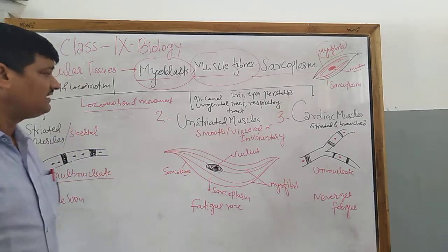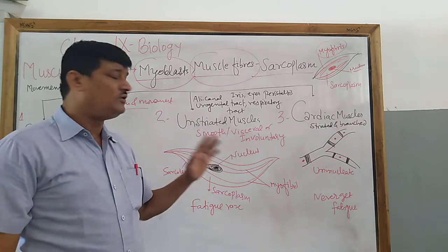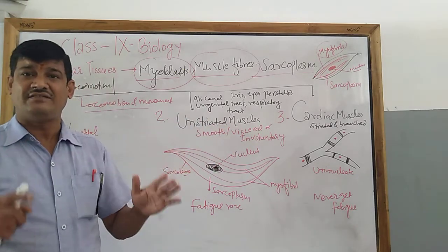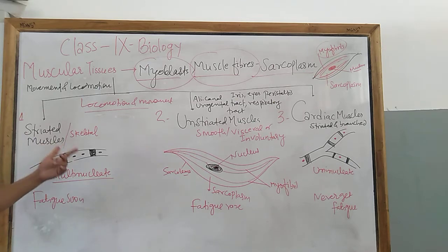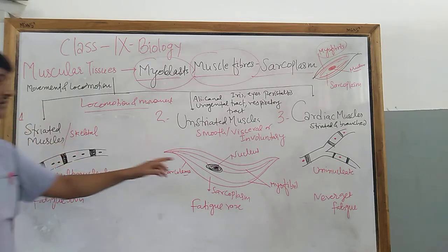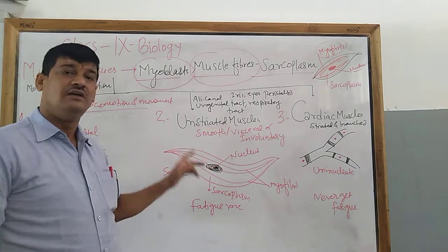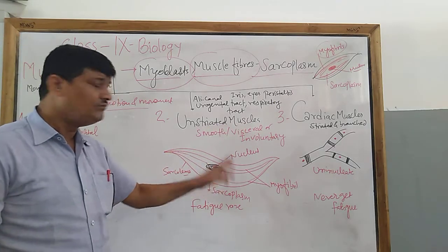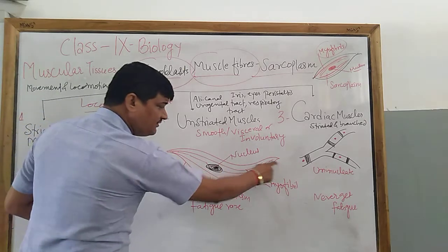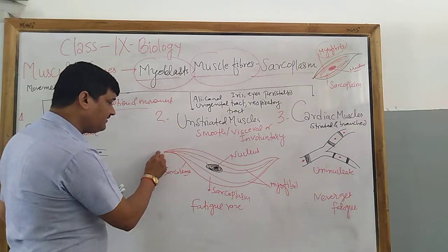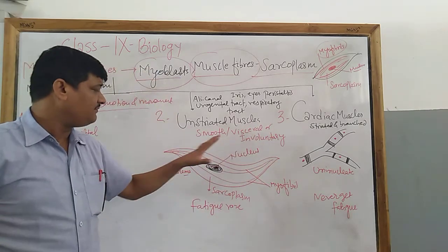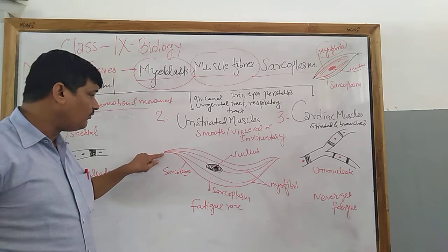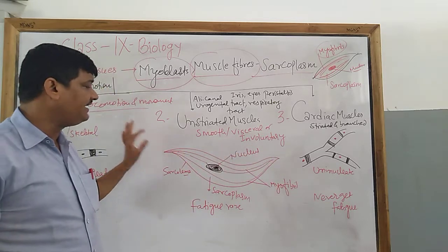Number two is unstriated muscle. Unstriated muscles do not have any bands — no light or dark bands like striated muscles. Striated muscle is multinucleated, having more than one nucleus. But unstriated muscle has only one nucleus, so we call it uninucleate. The shape is spindle-shaped — pointed at both ends, meaning they have tapering ends.